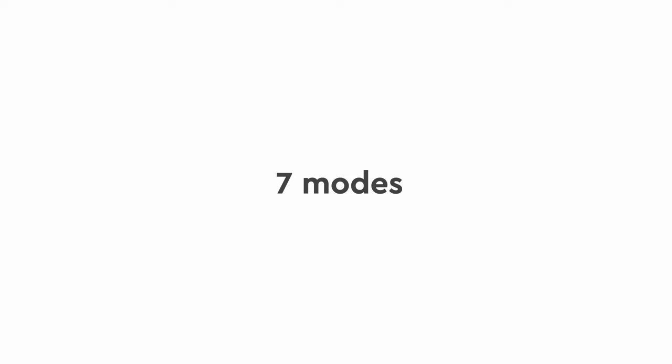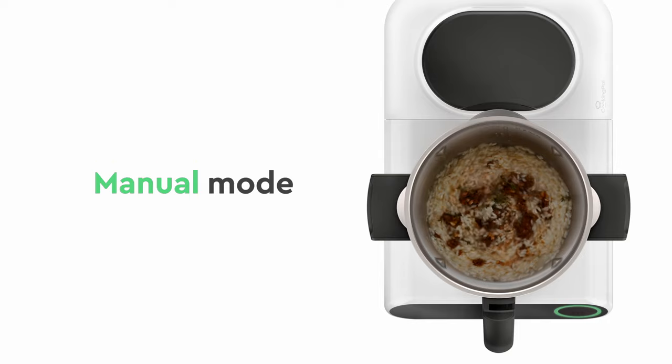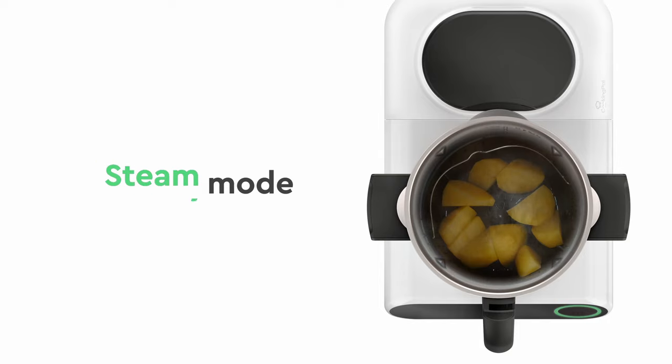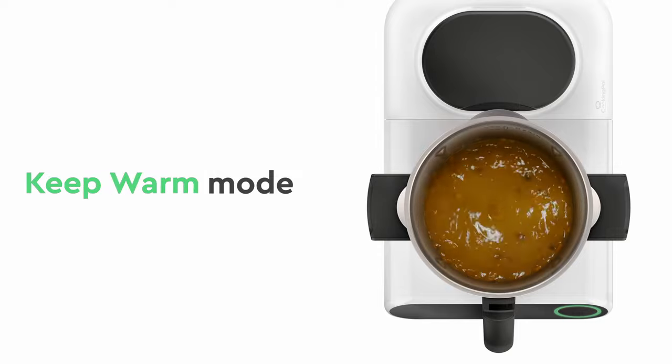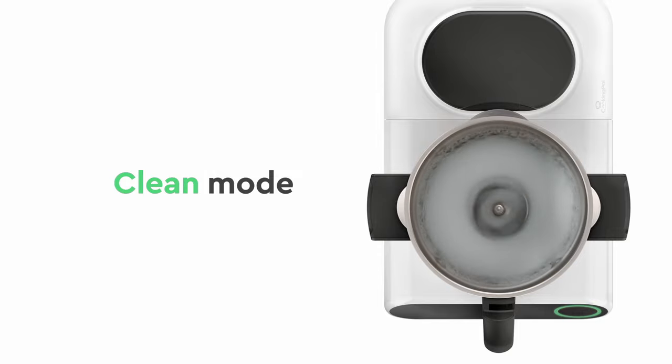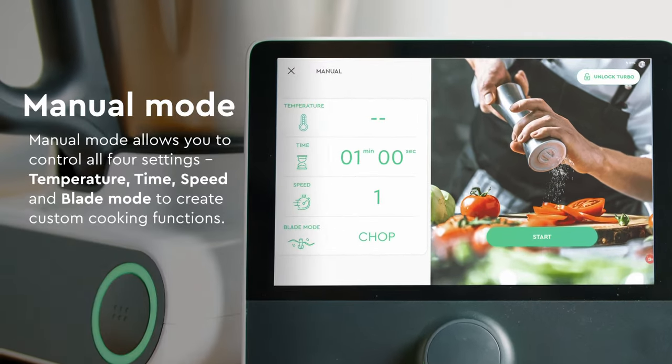In manual cooking mode we have seven functions. There is manual mode, steaming mode, sauteing mode, kneading mode, keep warm mode, clean mode and scale. In the manual mode there are four different variables to take into consideration which are temperature, time, speed and the blade rotation either stir or chop.